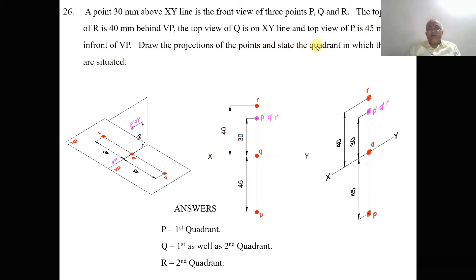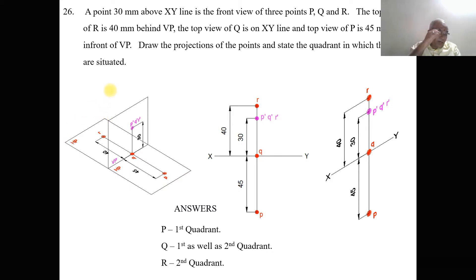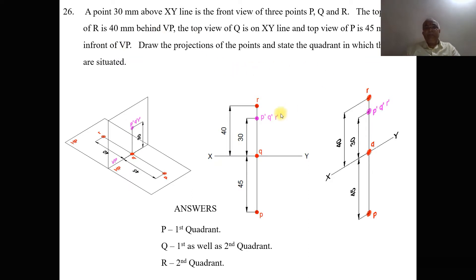Draw the projections of the points and state the quadrants in which the points are situated. When you rotate the first quadrant down, the top view of P will come below the XY line by 45 mm. The top view of Q is on the XY line. When the top view is rotated down in the first quadrant, the top view of a point in the second quadrant will go above the XY line. Therefore the top view of R is taken 40 mm behind VP — above the XY line. P dash is above and P is below the XY line, so P is in the first quadrant.